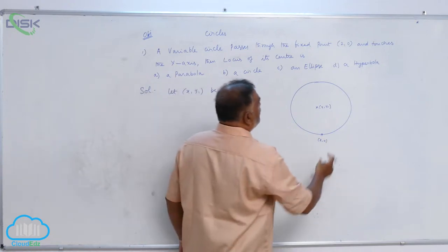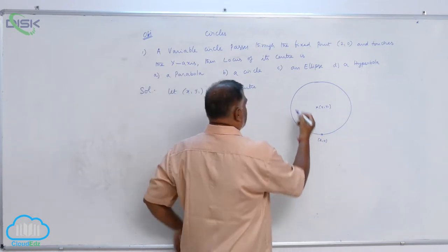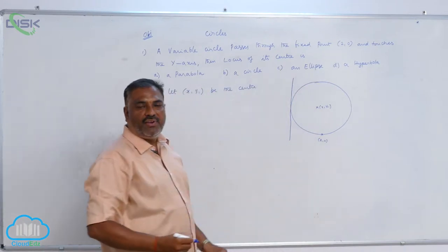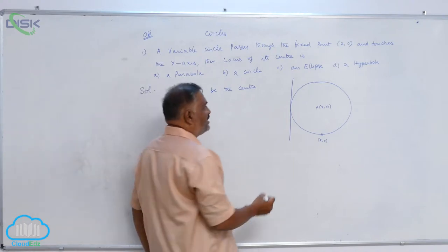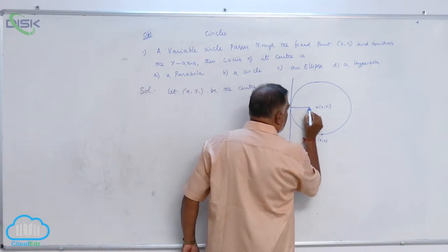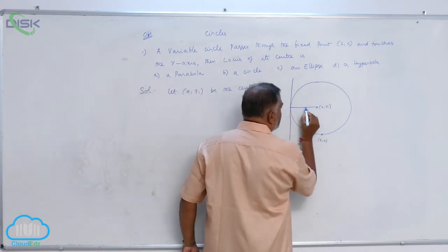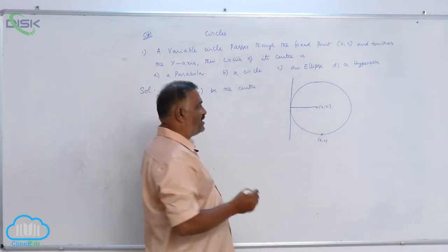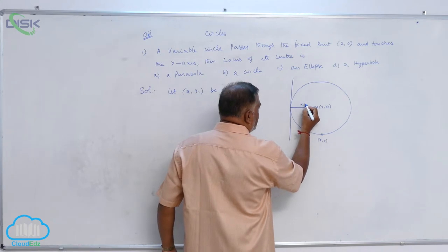Also it is given that circle touches the y-axis. So y-axis is touching. We know that whenever circle touches the y-axis, this is going to be the radius. Of course this is nothing but horizontal distance, x-coordinate of the center, that is |x1|.